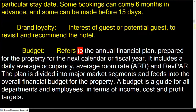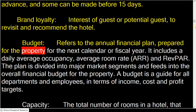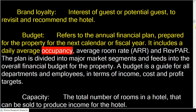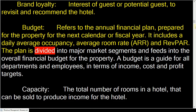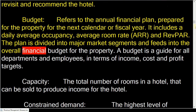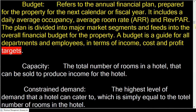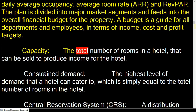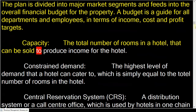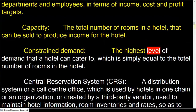Brand loyalty is the interest of a guest or potential guest to revisit and recommend the hotel. Budget refers to the annual financial plan prepared for the property for the next calendar or fiscal year. It includes daily average occupancy, average room rate, and RevPAR. The plan is divided into major market segments and feeds into the overall financial budget for the property, serving as a guide for all departments and employees in terms of income, cost, and profit targets.